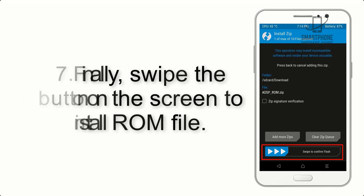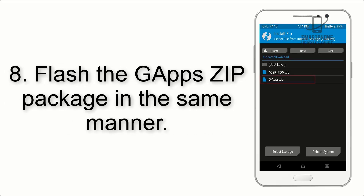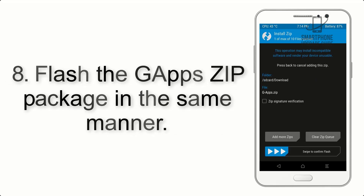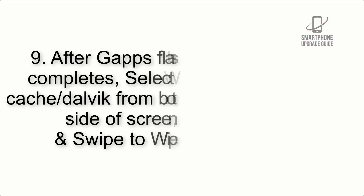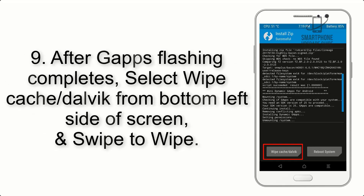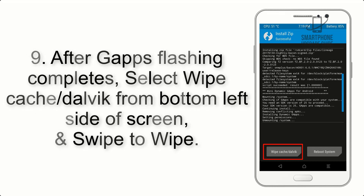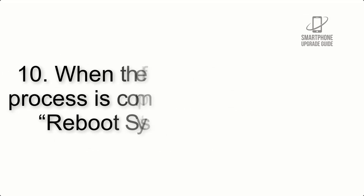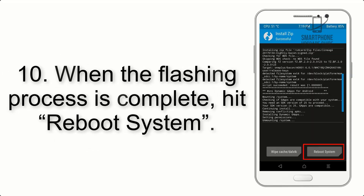Step 7: Swipe the button on screen to install the ROM file. Step 8: Flash the GApps zip package in the same manner. Step 9: After GApps flashing completes, select Wipe Cache and Dalvik from the bottom left side of the screen and swipe to wipe.